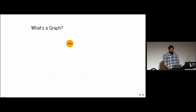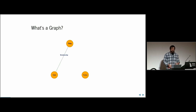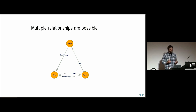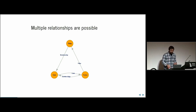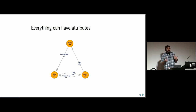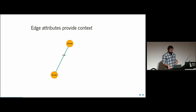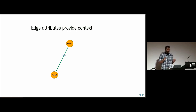A graph is made up of things — also known as nodes and vertices — and these things are connected with relationships. Relationships are also known as links and edges. Links can have direction, and nodes can have multiple links between them. These edges and nodes can have attributes, and these attributes can be visualized. An important thing about edge attributes is that they give you context about the network.